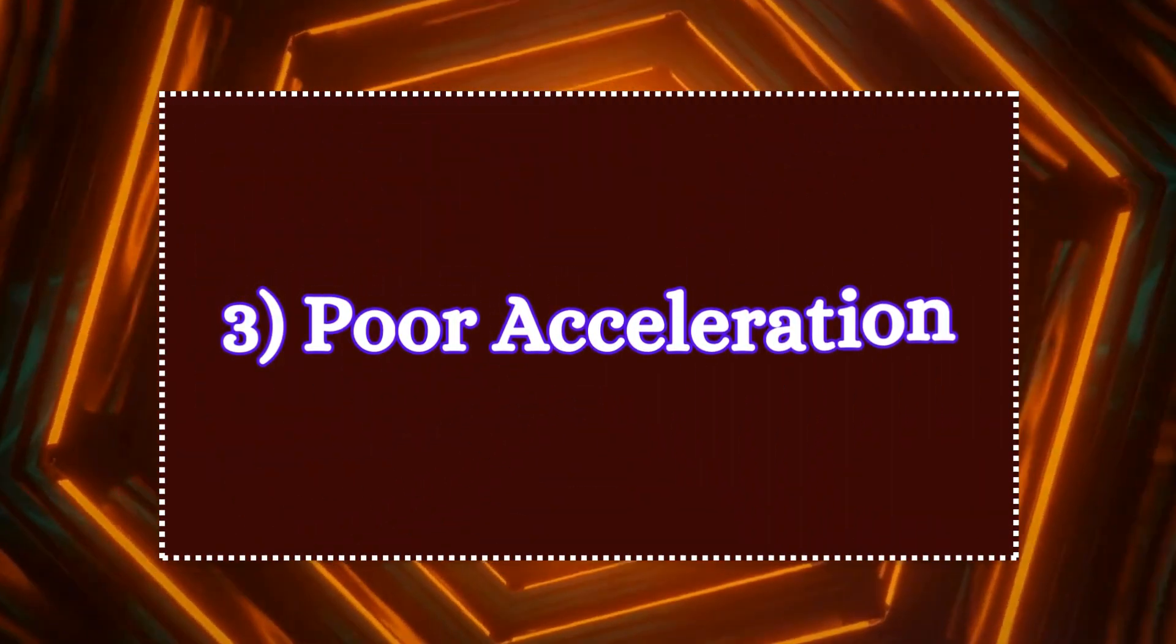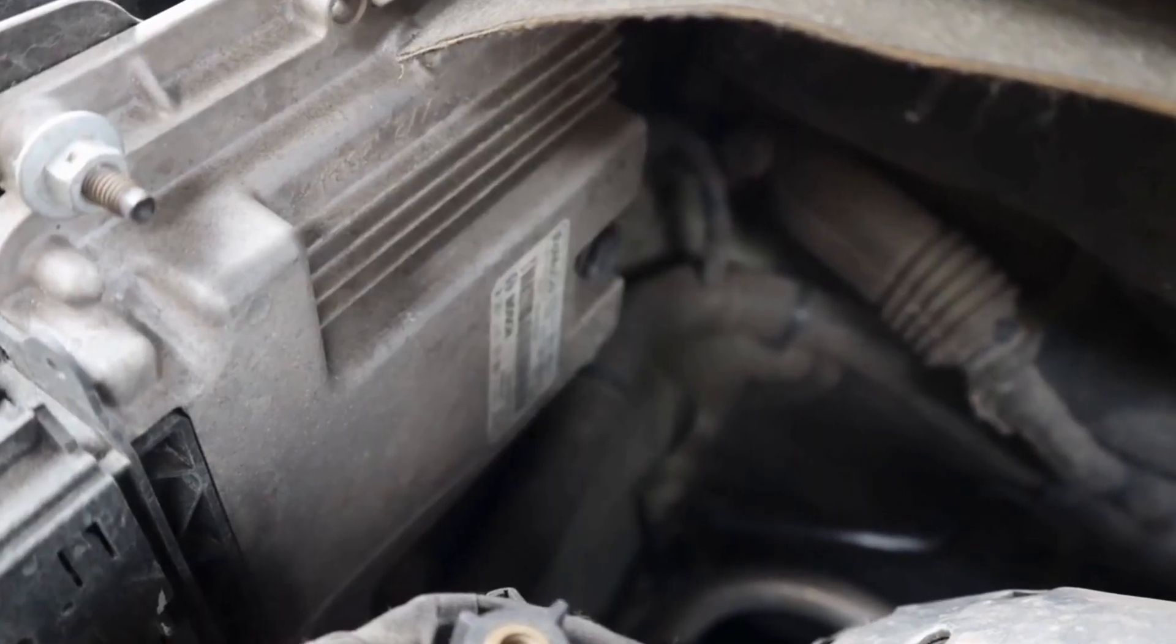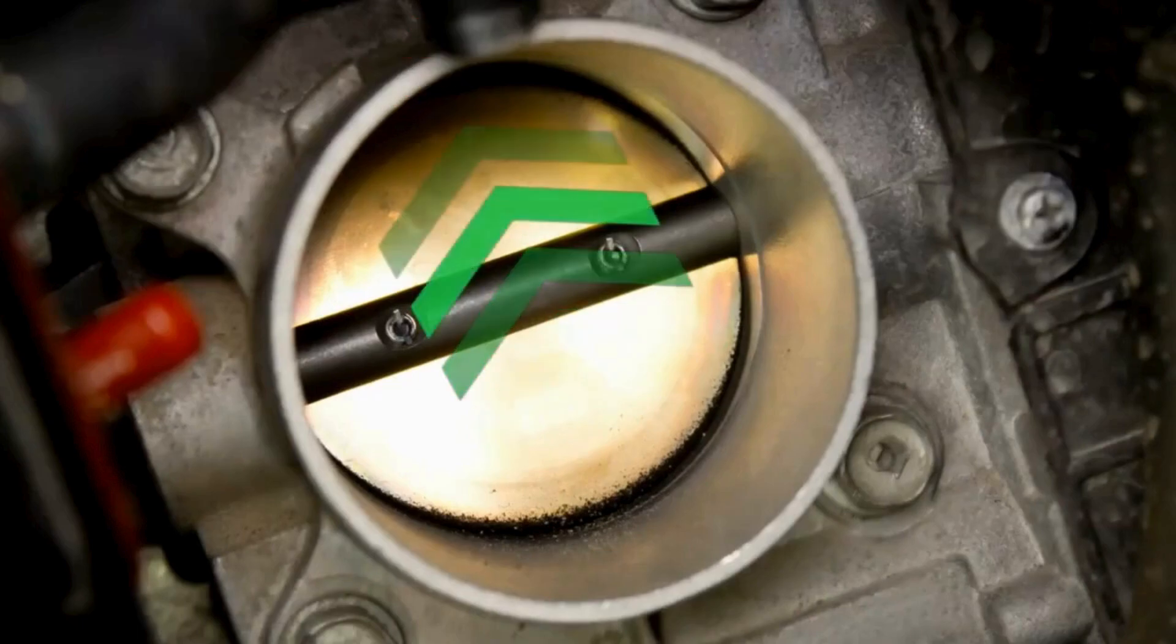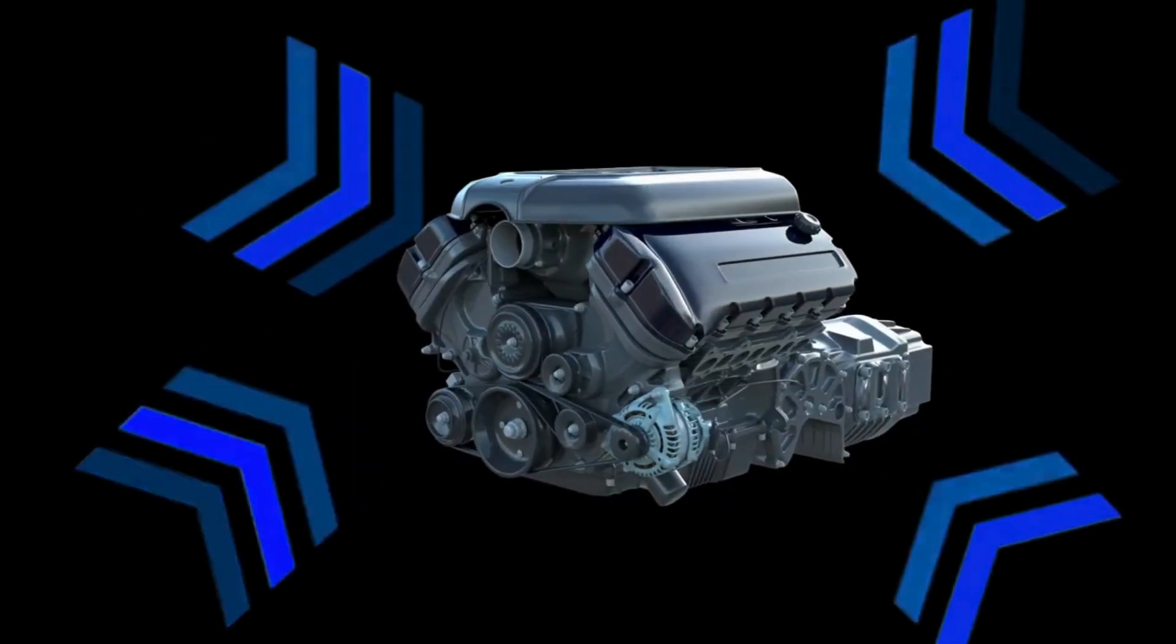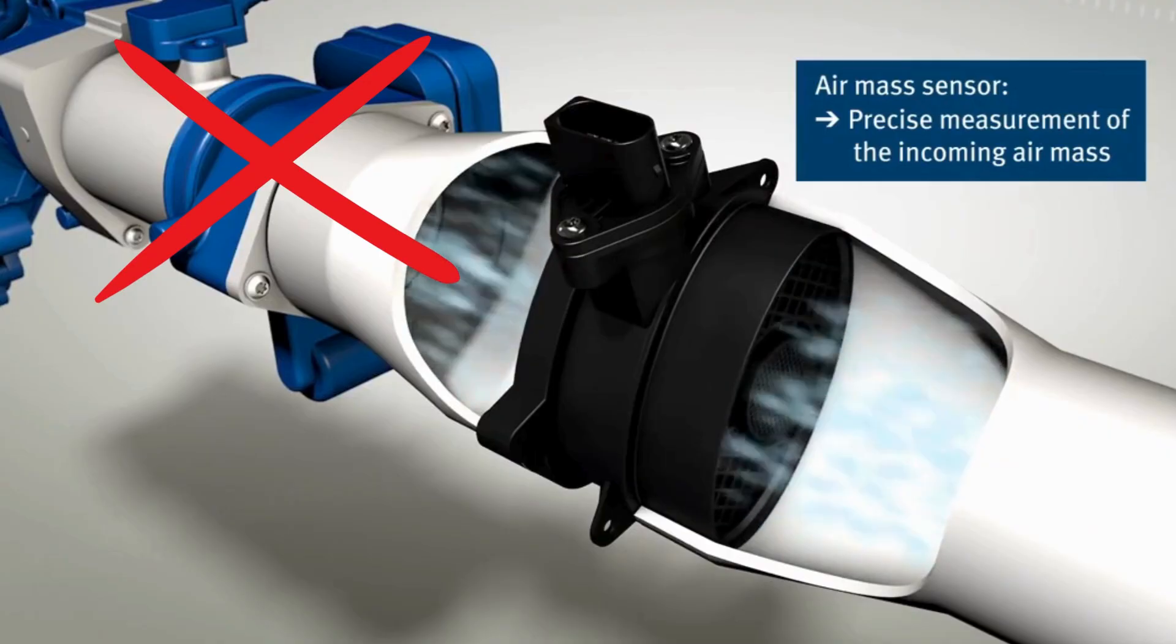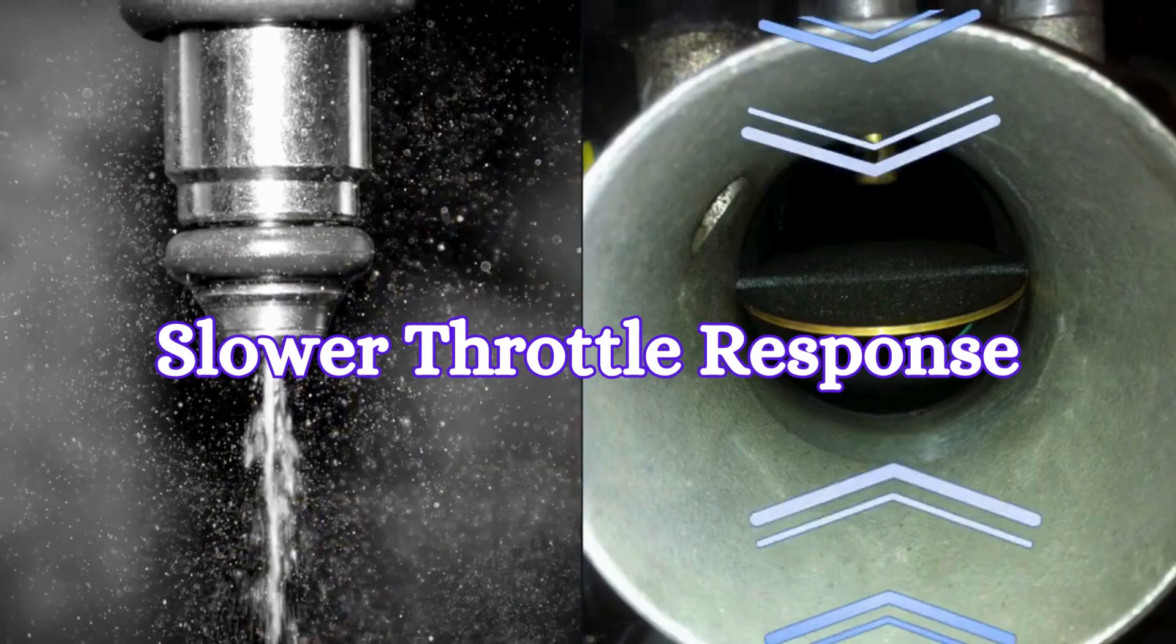3. Poor acceleration. A bad throttle body can fail to open or close as needed, which restricts airflow. Since the engine requires more air during acceleration, insufficient air entering the engine leads to a lack of power and slower throttle response.